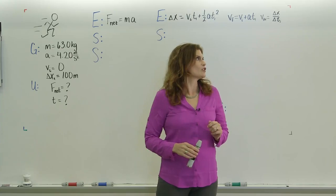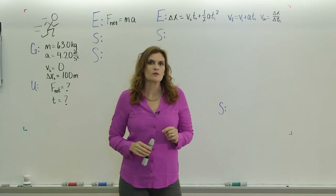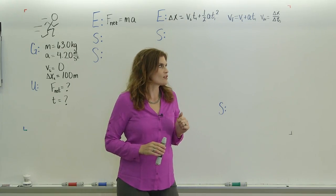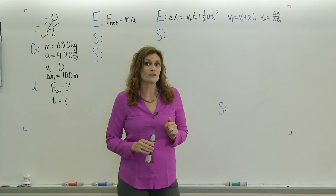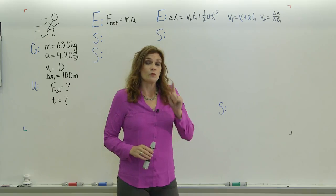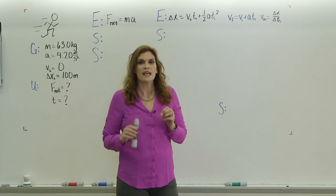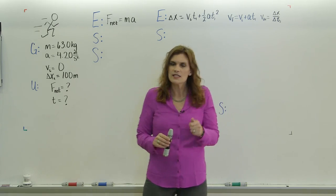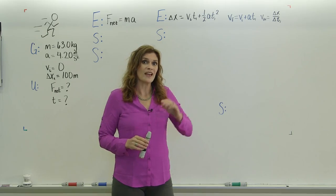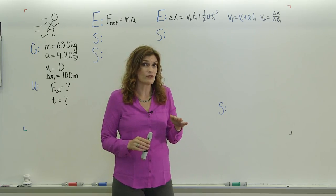So we're looking at a sprinter. We've got a 65 kilogram sprinter starting from rest and accelerating at 4.20 meters per second squared. We want to find two things about it. We want to find what his net external force is, and if he continues accelerating for 20 meters and then maintains that velocity for the rest of the race, what his total time will be.